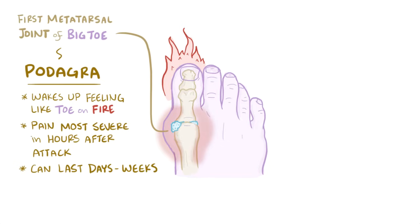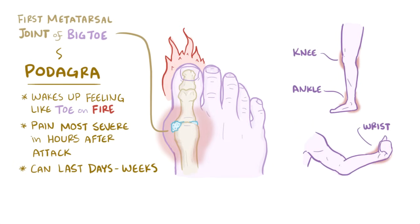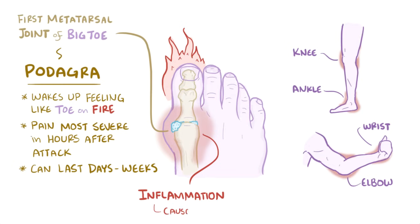Gout can also affect other joints as well, like those in the ankles, the knees, the wrists, and the elbows. This inflammation and local pain is ultimately caused by white blood cells, or leukocytes, which migrate to the site to help eliminate uric acid and release pro-inflammatory chemicals, including cytokines.